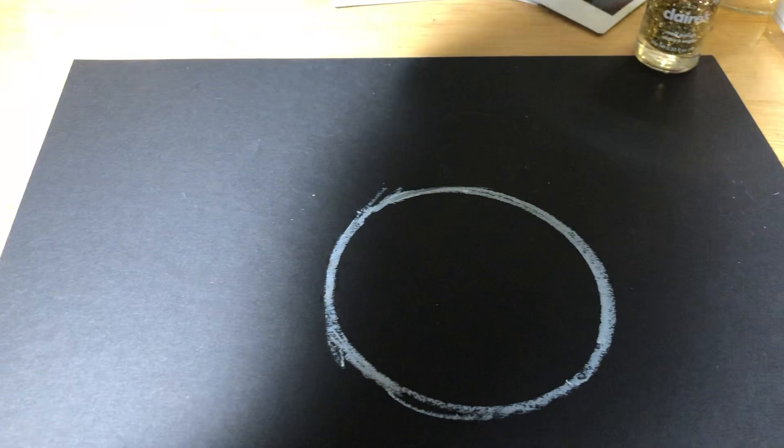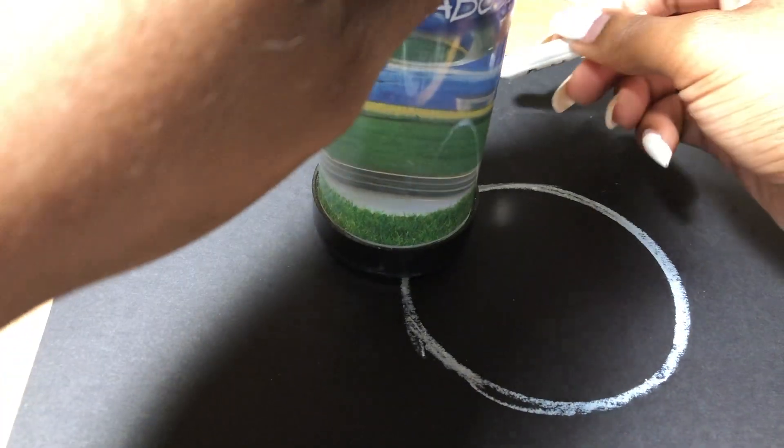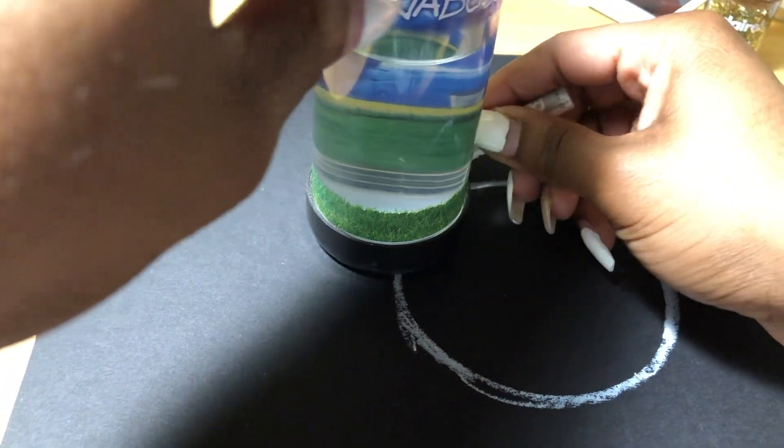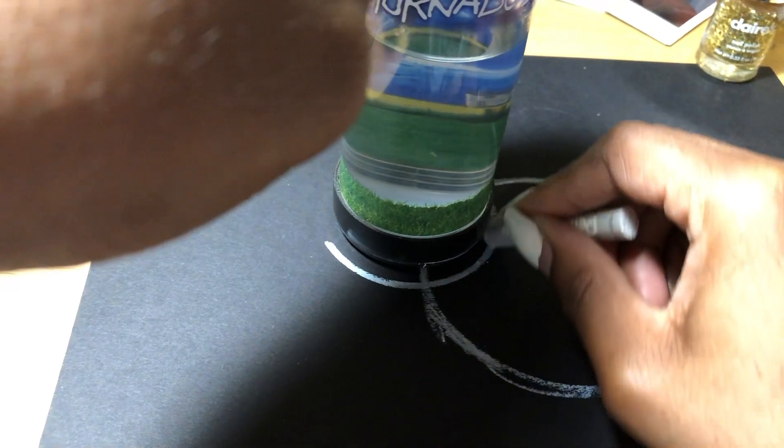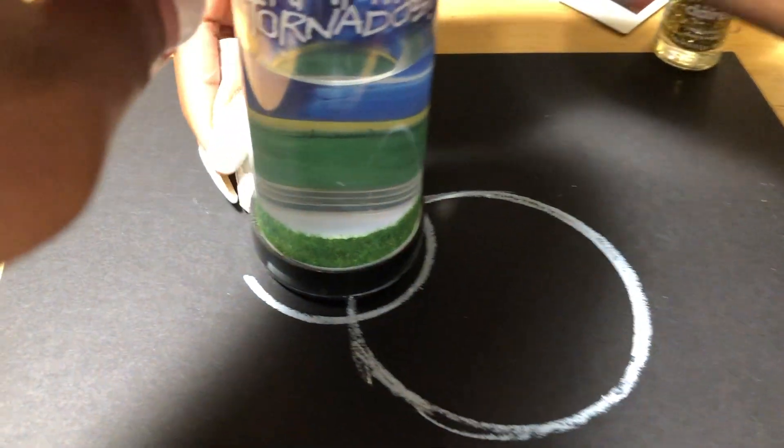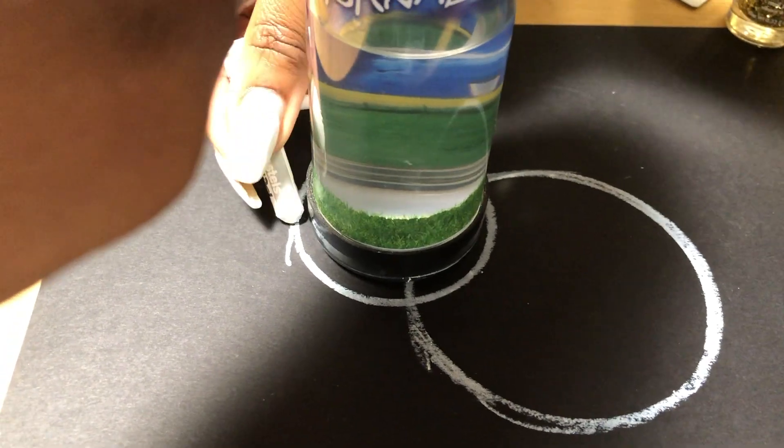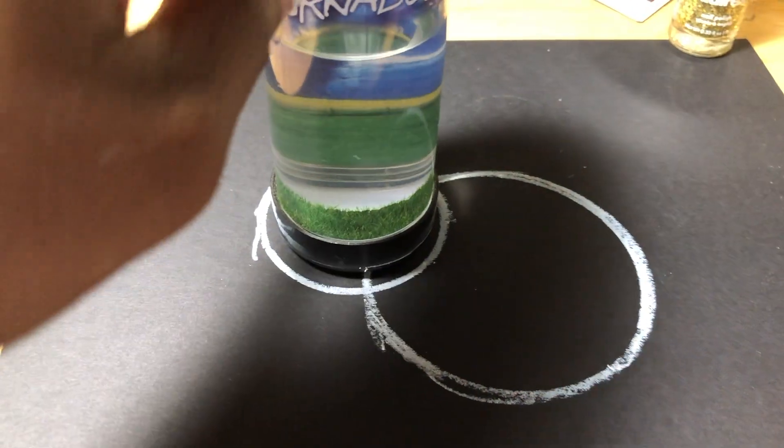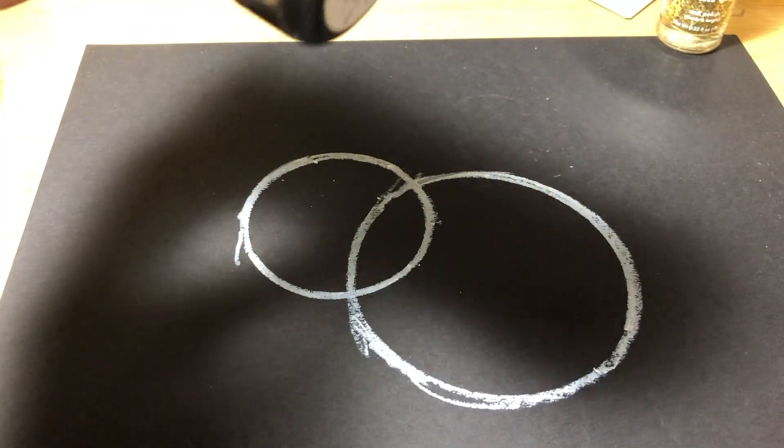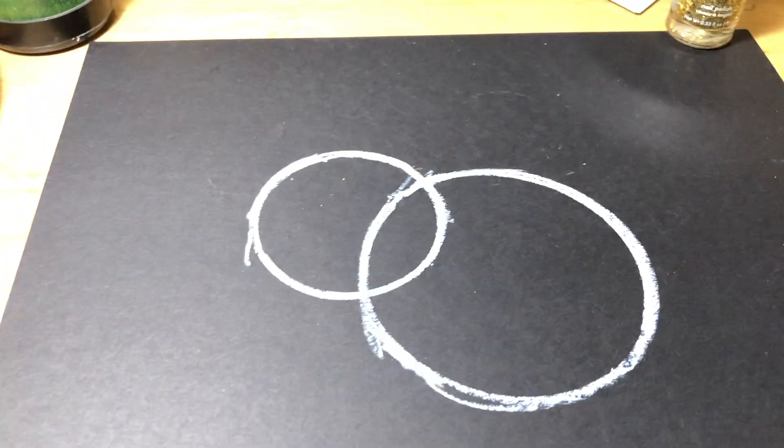Then I'm going to take a medium circle and just kind of layer it a little bit. And then don't be afraid to make a line stick. It's actually better because it will make it a little more realistic.